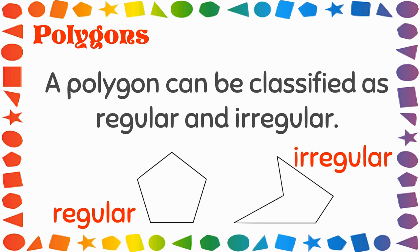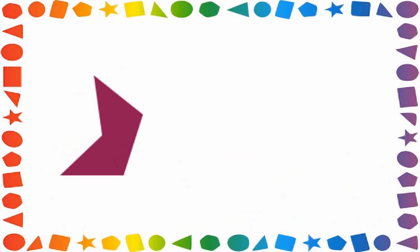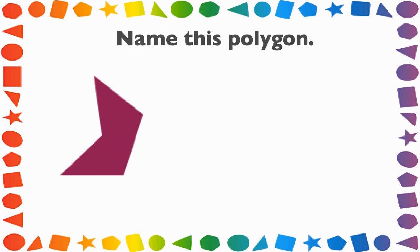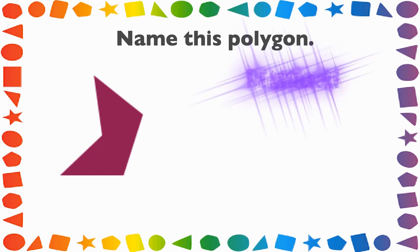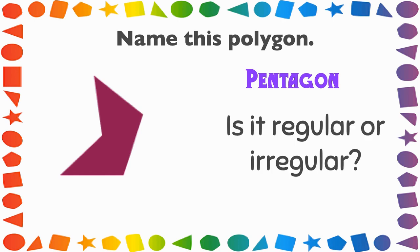So knowing that, take a look at this polygon. Can you name this polygon? Remember to count the sides. If you said a pentagon, you are correct. Now the question is, is it regular or irregular? This polygon is an irregular polygon.